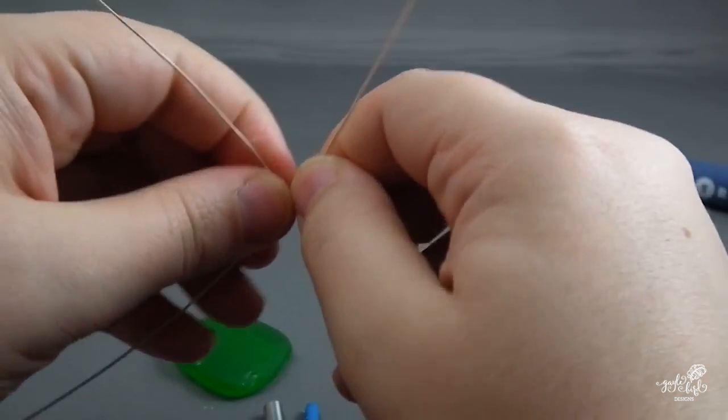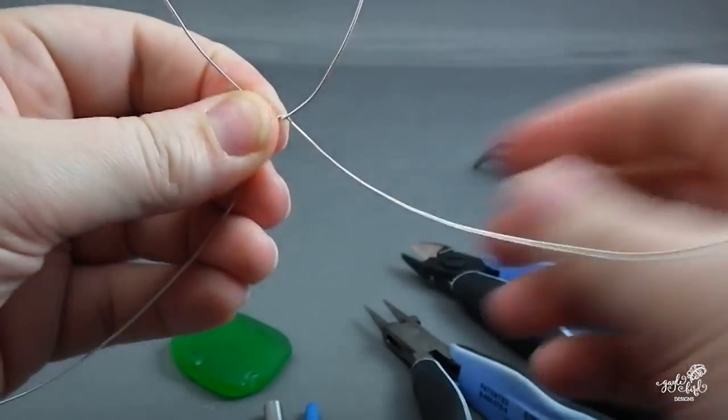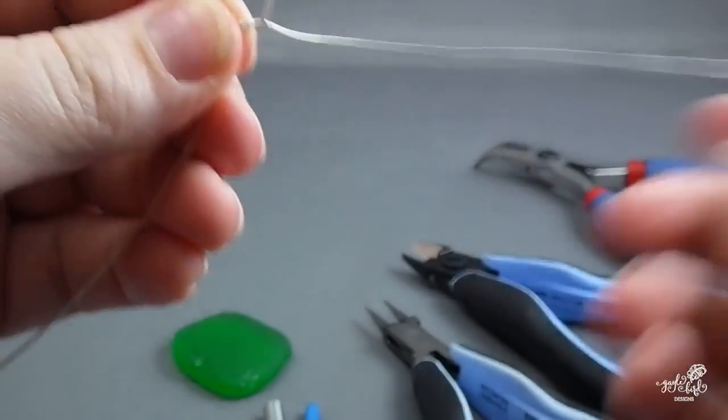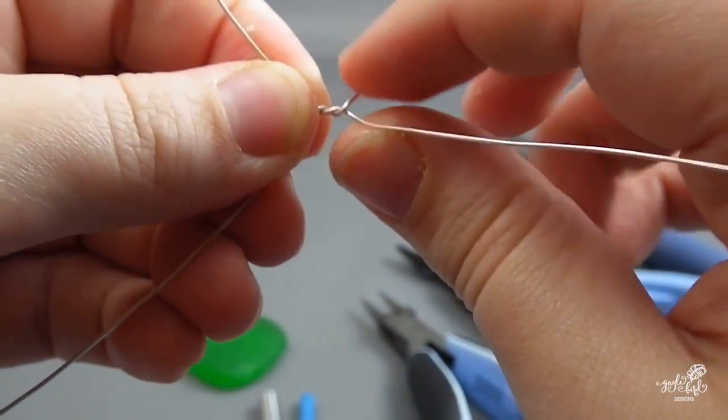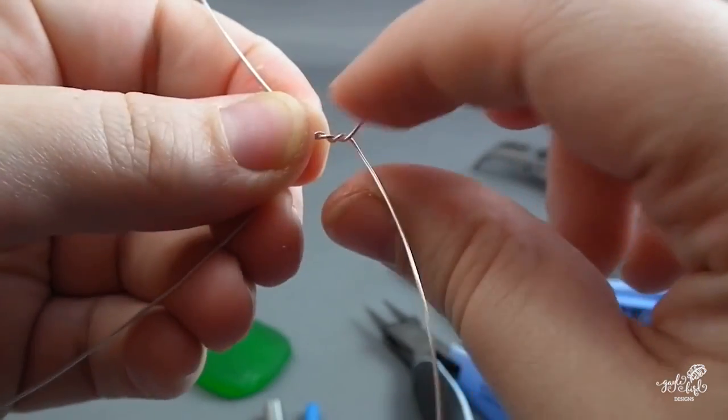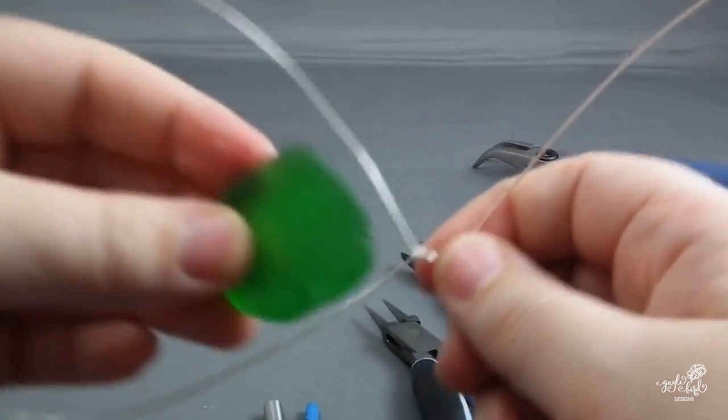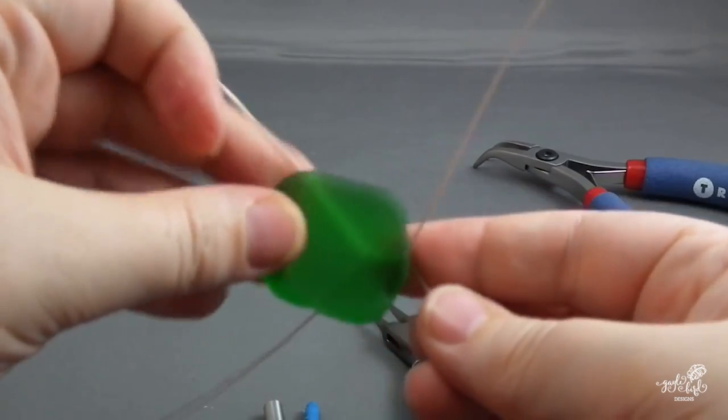Holding it wrong can result in a really sloppy twist. Hold your thumbs as close to each other as possible and push them together during the twist to make sure that it's neat. Make sure you're twisting the wires equally, not wrapping one around the other.